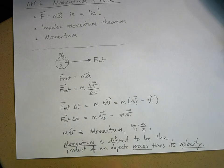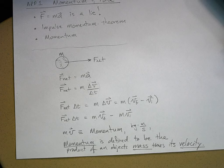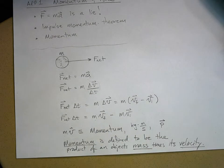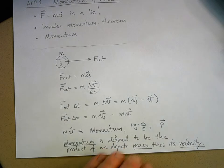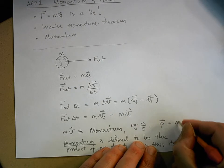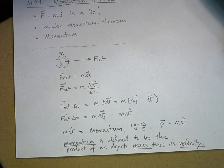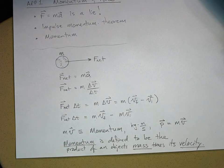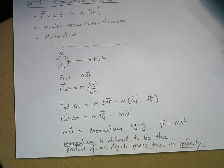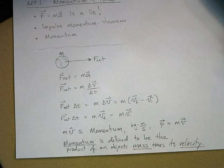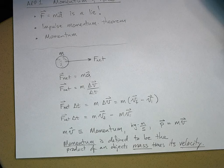We have a variable name for it, and this is where it's really weird - don't ask me why, but we call momentum with a lowercase p. So p equals m times v. An object's momentum is equal to its mass times its velocity. That is the definition of momentum.